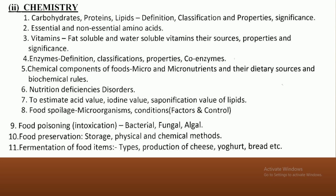For Chemistry, the important components include carbohydrates, proteins, and lipids — their classification and significance. Essential and non-essential amino acids, vitamins (fat-soluble and water-soluble such as Vitamin B and C), enzymes — their classification, properties and chemical components, nutrient deficiency covered in the book Food and Nutrition, acid value, iodine value, food spoilage, microorganism poisoning, food preservation, and fermentation of food items.